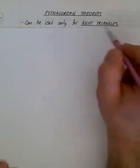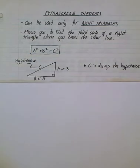Okay, so this video is about the Pythagorean theorem. The key with the Pythagorean theorem is that we can only use it for right triangles. Remember, right angle triangles have a right angle in them. The Pythagorean theorem isn't really trigonometry, but it allows us to find the third side of a right triangle when you know the other two.